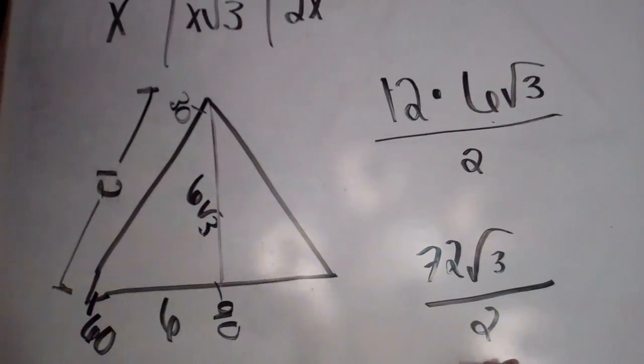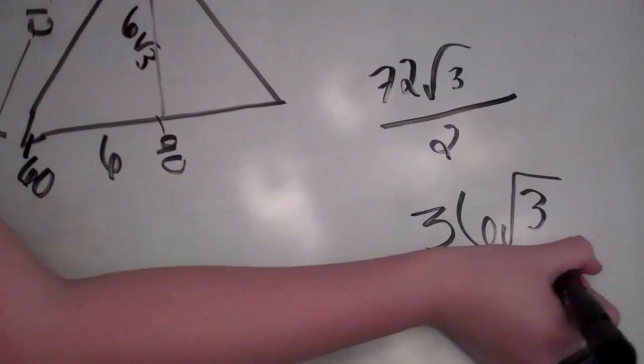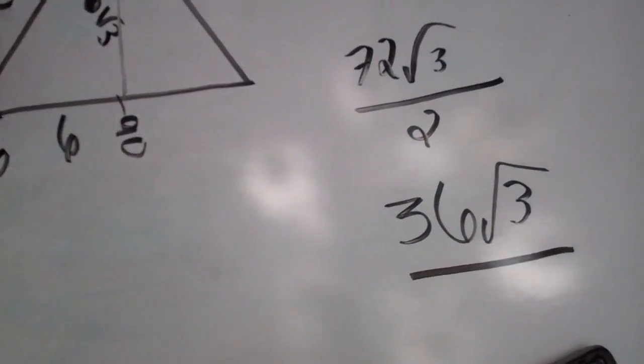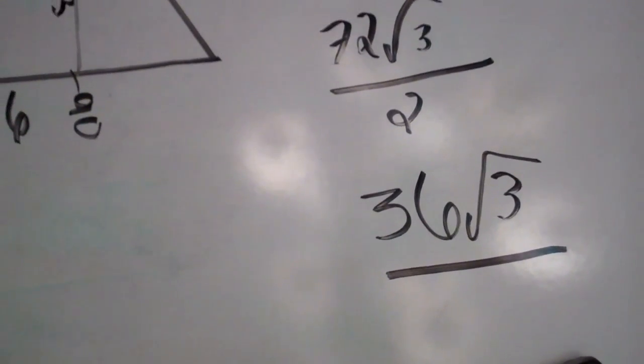72 divided by 2 is 36, and then square root of 3. 36 square root of 3 is your total area for your equilateral triangle with each side being 12 units long.